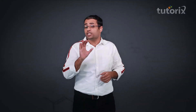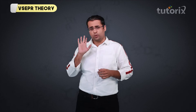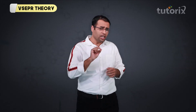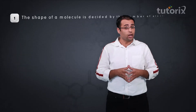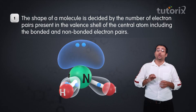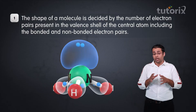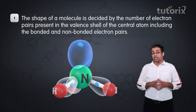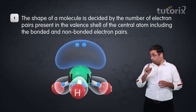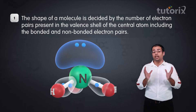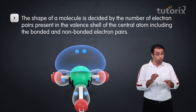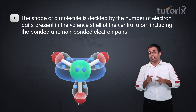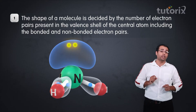Let us take our first step to understand VSEPR theory by learning about its assumptions or postulates. The first assumption is that the shape or structure of a molecule is decided by the number of electron pairs present in the valence shell of the central atom of the molecule, where these electron pairs include both bonded electron pairs and non-bonded electron pairs.